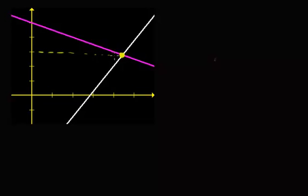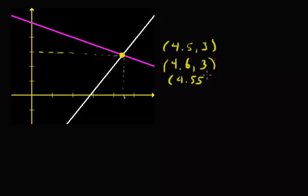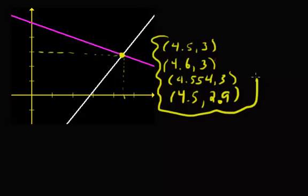If you guess where it is, it kind of looks like it's at 4.5 comma 3. You would check this, and maybe it works, maybe it doesn't. What if it was actually 4.6 comma 3? Or 4.554 comma 3? Or 4.5 comma 2.9? You do not know, and every time you make a guess and plug it in, if it's wrong, this is going to take a long time.